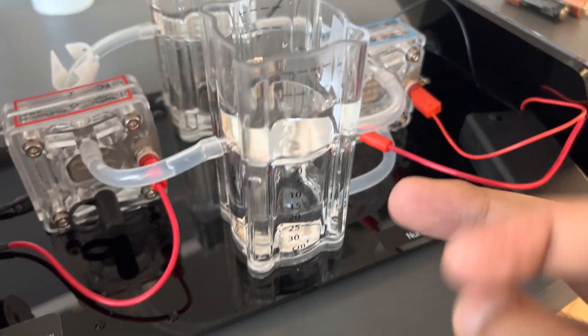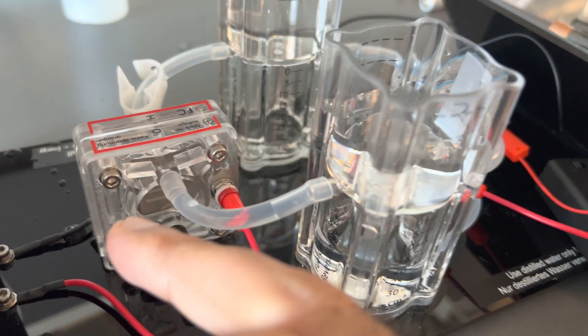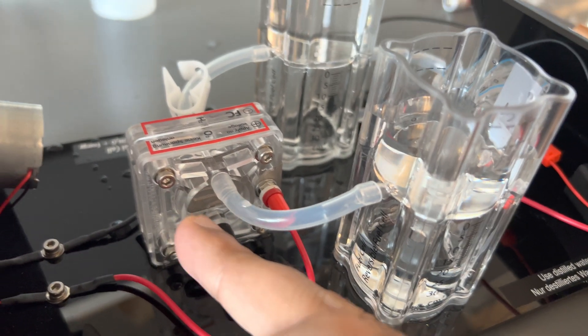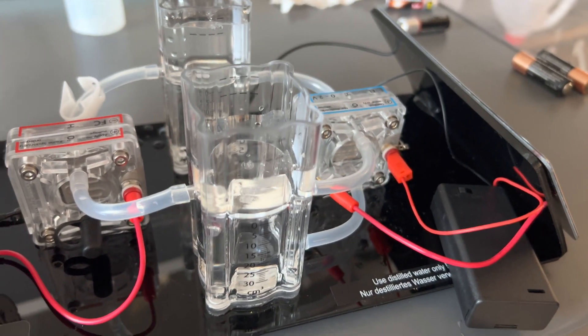So these hydrogen and oxygen, they come here, they get accumulated in these tanks, separate tanks, and then they again join back together in the fuel cell to drive the pump. That's how the operation is for the whole thing.